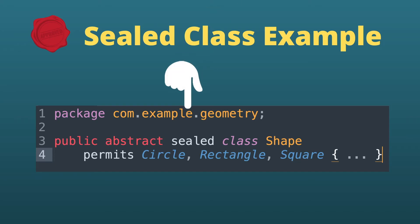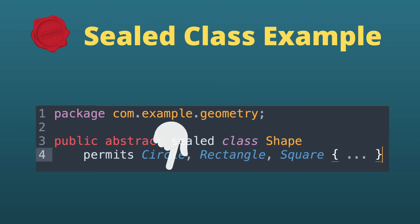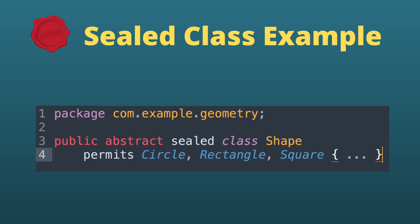Here is an example of a sealed class. We have the package com.example.geometry, and under this package we have created a sealed class called Shape. We use the new 'sealed' keyword when declaring this class, and after 'Shape' we write 'permits' to identify which classes are allowed to extend it — Circle, Rectangle, and Square. Only these classes can extend the Shape class; no other classes can.